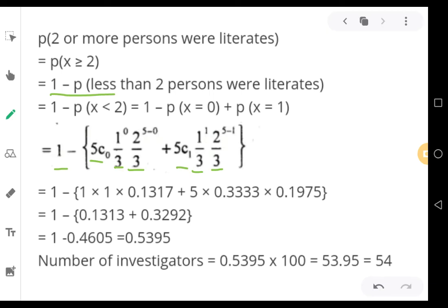In the next stage, 1 as it is will be there. Then 5 combination 0 will be 1. 1 by 3 to the power of 0 will be 1 into 2 by 3 to the power of 5. If you divide 2 by 3 and multiply it 5 times, the answer you are getting should be 0.1317 plus 5 combination 1 is 5. 1 by 3 to the power of 1 is 1 by 3 only. So 1 by 3 if you divide, you will get 0.333. And 2 by 3 to the power of 4, that should be 0.1975.